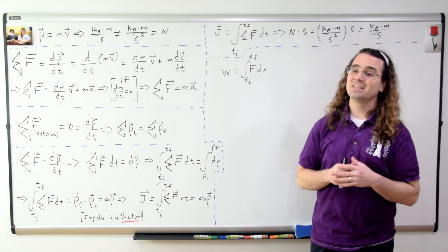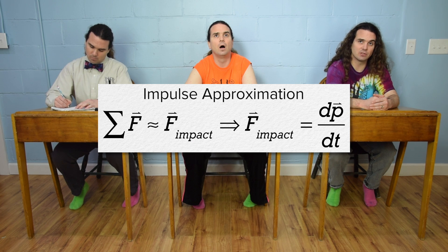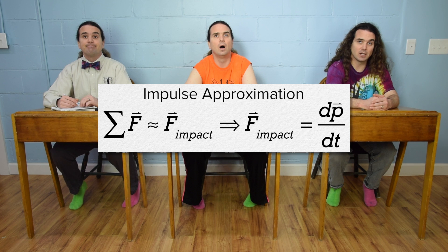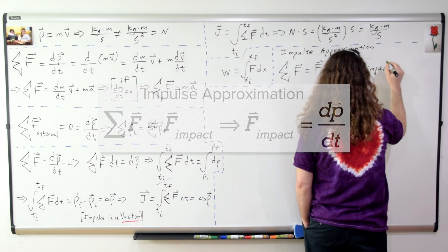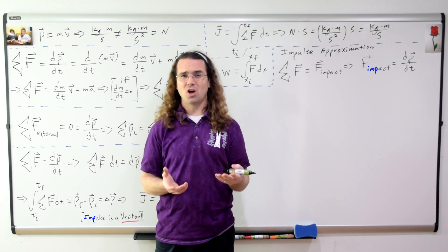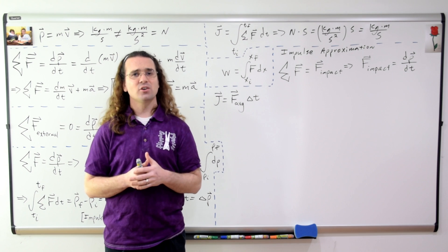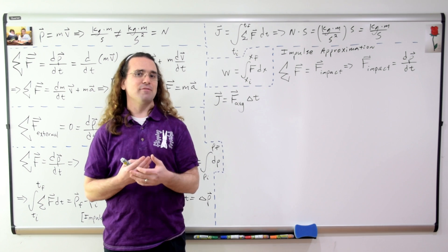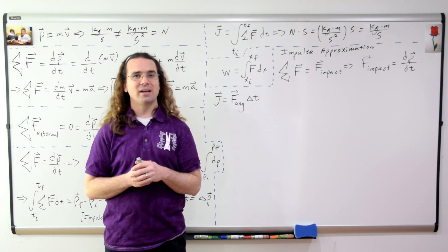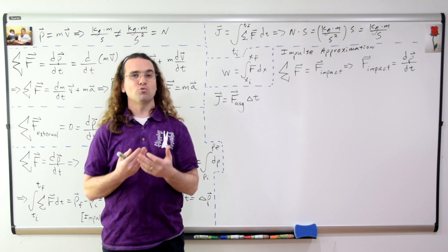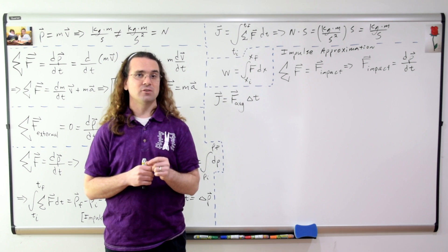What is the impulse approximation? The impulse approximation is where the force of impact during the collision is so large that it overshadows all the other forces, and therefore the net force is approximately equal to the force of impact during the collision. This applies with large forces of impact which usually last for a short time interval. If we consider the force of impact to be constant or use the average force of impact, the impulse equals the average force of impact times the change in time, giving us a rectangle with the same area as the definite integral impulse equation.